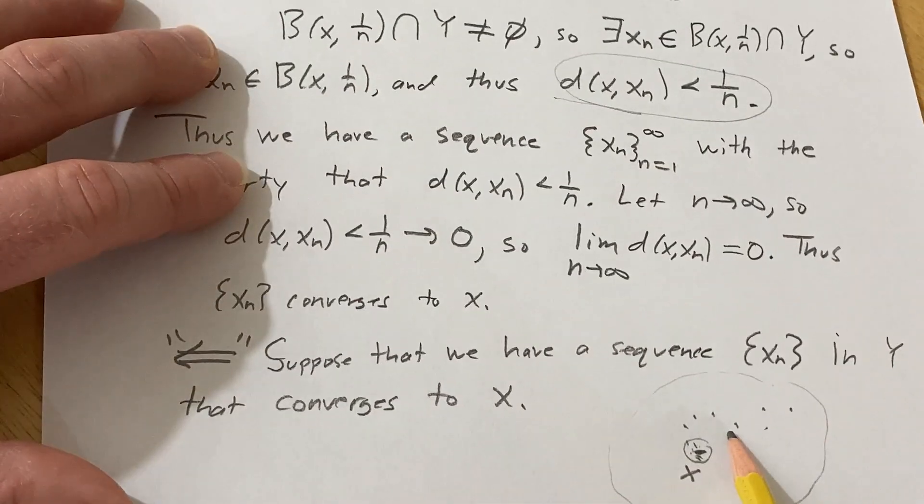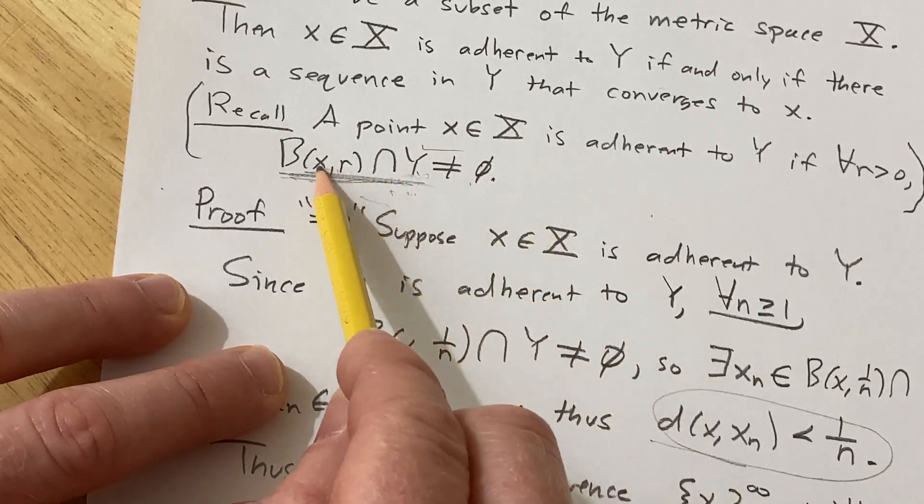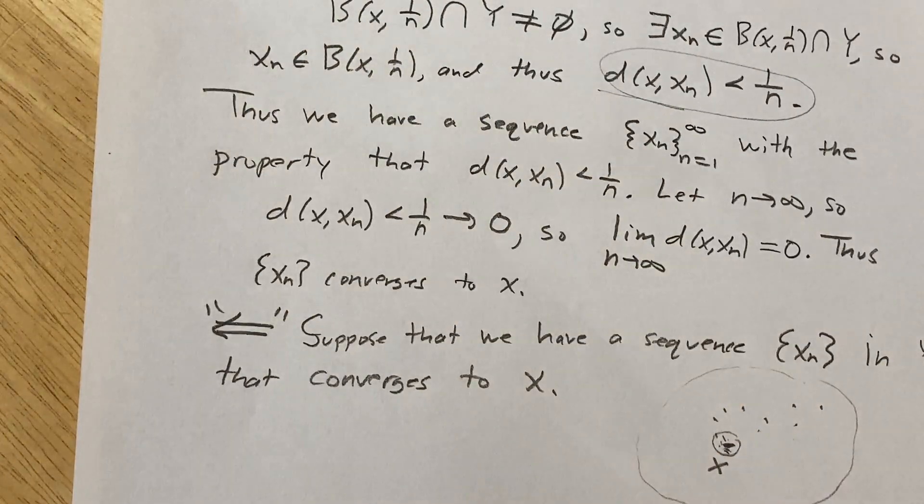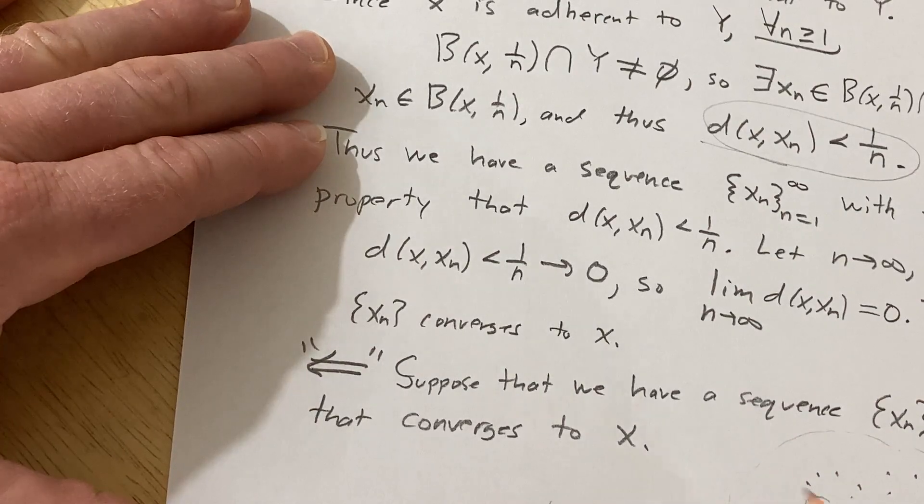So no matter what open ball you pick, you're going to have points in that open ball. So when you intersect it with Y, it's going to be non-empty. So x is going to be adherent to Y. That's what it means to be adherent to Y. If every open ball centered at x of positive radius contains points that are in Y, so the intersection here is non-empty.